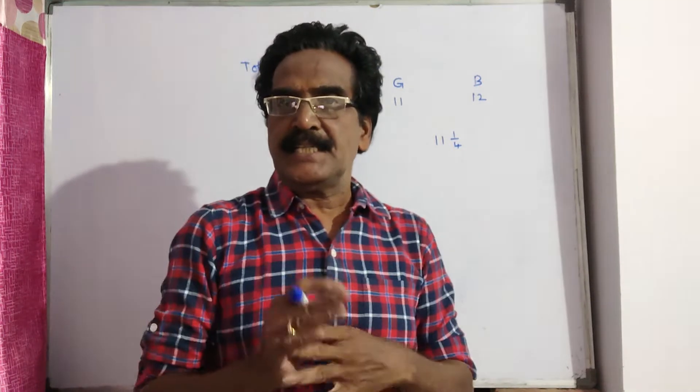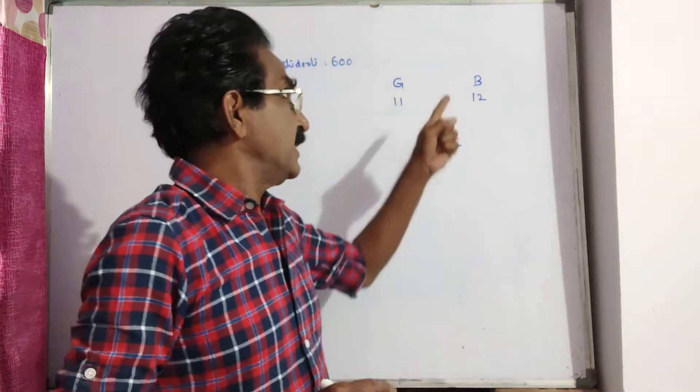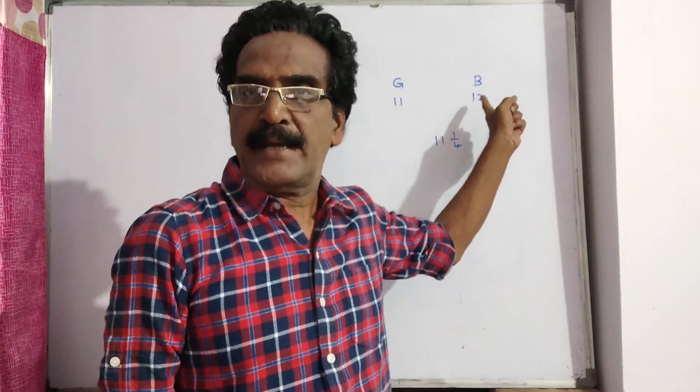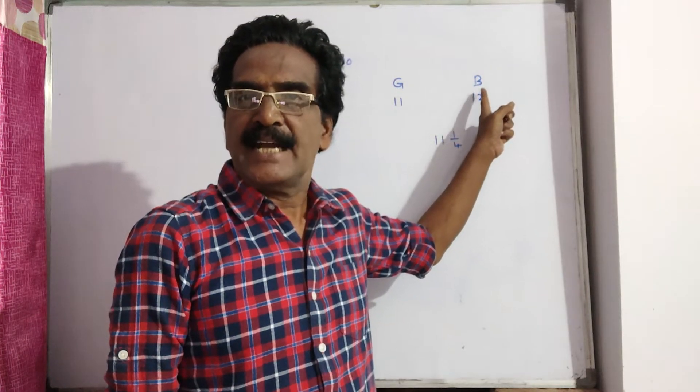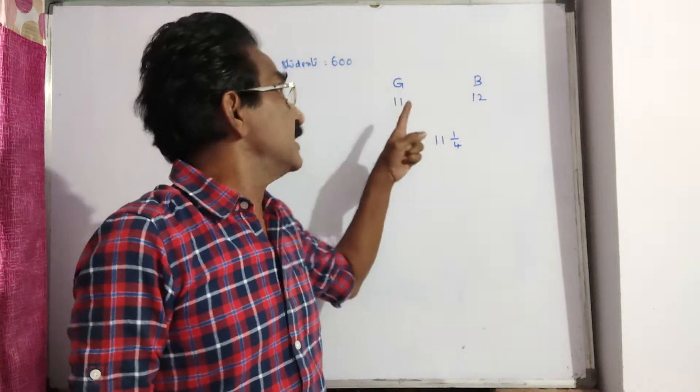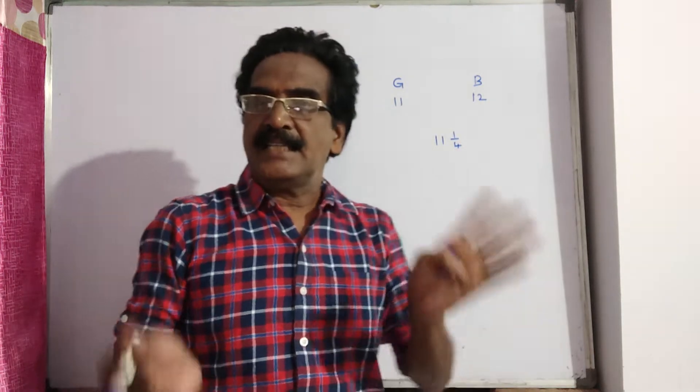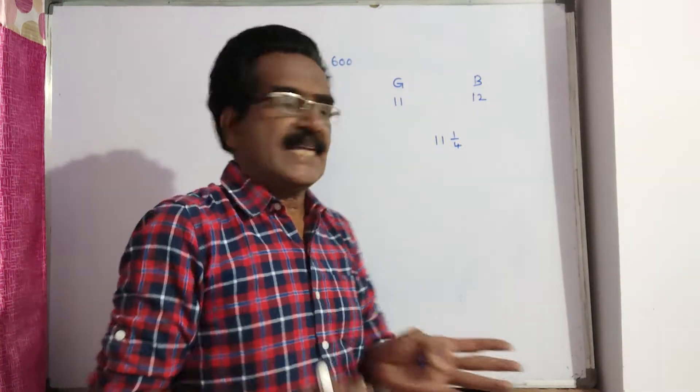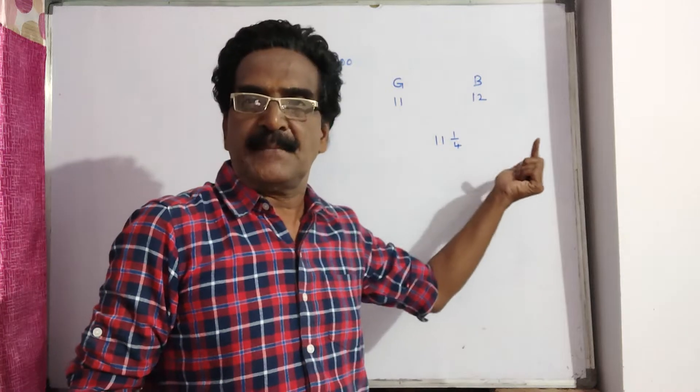See friends, there are 600 students in a school and the average age of boys is 12 years and the average age of girls is 11 years and the average age of the whole class is 11 years 3 months.